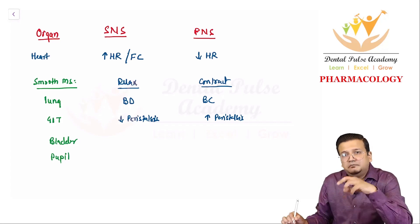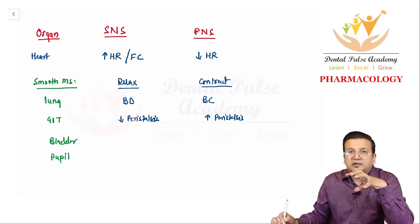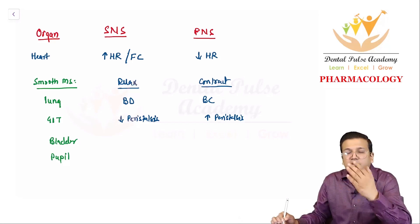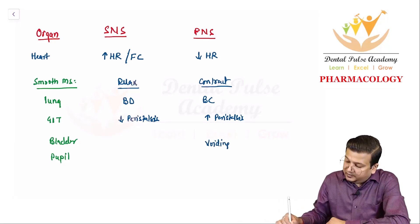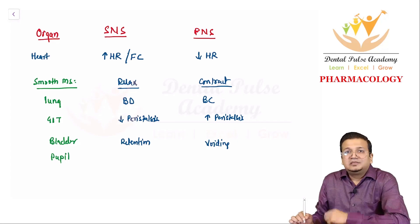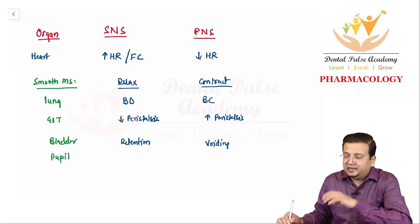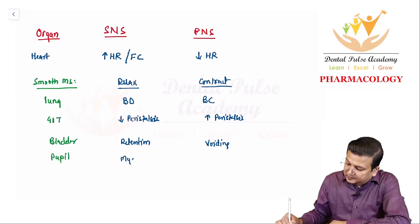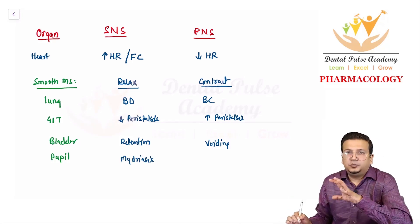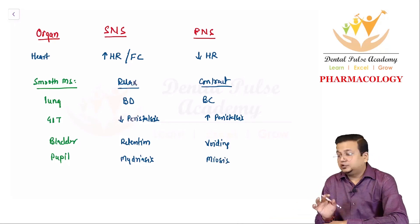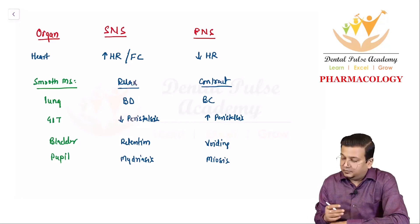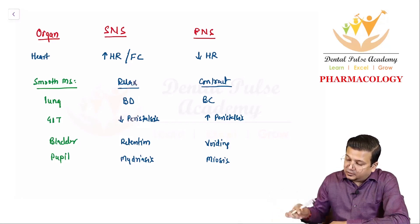For the bladder, parasympathetic stimulates smooth muscle causing contraction, so voiding of urine is a parasympathetic feature, and retention of urine is a sympathetic feature. For the pupil, sympathetic inhibits the pupil muscle causing relaxation and dilation — called mydriasis. Parasympathetic contracts the pupil, making it smaller — called miosis.